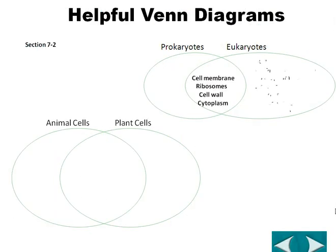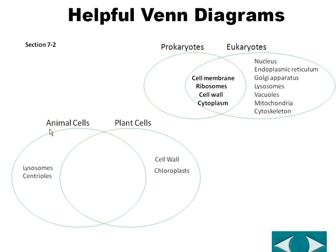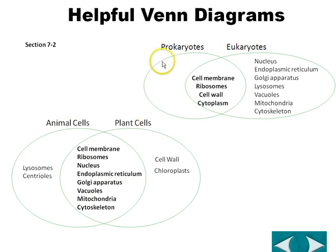Here we have helpful Venn diagrams comparing prokaryotes with the more complex eukaryotes (plants, animals, protists, and fungi). Ribosomes are listed in the area shared with bacteria. Plant cells have cell walls and chloroplasts that animal cells don't, while animal cells have lysosomes and centrioles that plant cells don't. Animal and plant cells both share cell membranes, ribosomes, nucleus, endoplasmic reticulum, Golgi, vacuoles, mitochondria, and cytoskeleton.